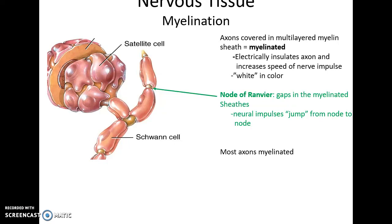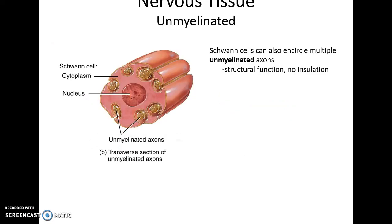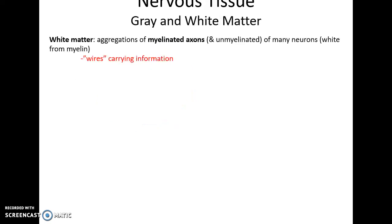Myelination is very important — it electrically insulates the axon, increasing the speed of the nerve impulse, and is white in color. The myelin sheath does not cover the entire axon; the small gaps between sections of the sheath are called the nodes of Ranvier. The nerve impulse appears to jump from one node to the next. Most axons are myelinated; the few that are not are still associated with a Schwann cell for structural organization.